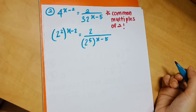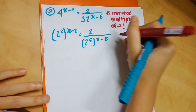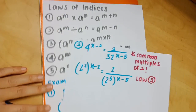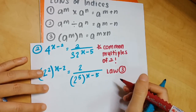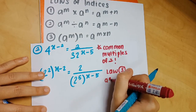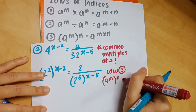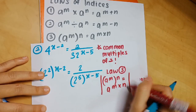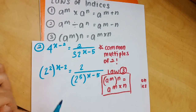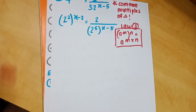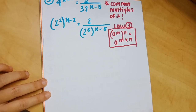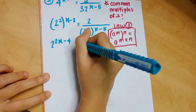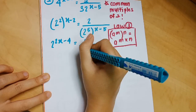The next step requires Law 3 of indices: (a^m)^n = a^(m×n). Expanding: 2 is multiplied by x and 2 is multiplied by negative 2, giving the new equation 2^(2x−4) equals 2 over 2^(5x−25).